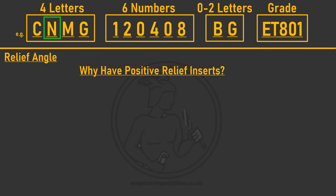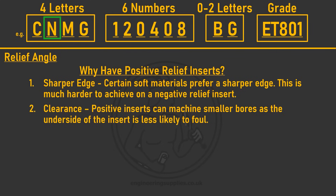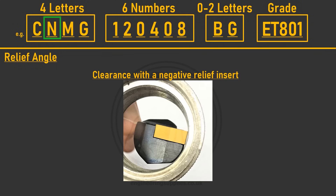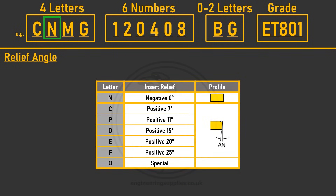Positive relief inserts exist for two reasons. First, certain soft materials like aluminium prefer to be machined with as sharp an edge as possible, which is more difficult to achieve with a negative relief insert. Second, and most commonly, clearance — when machining the inside of a bore, the underside face of a negative insert will rub before the cutting edge engages. A positive insert's clearance angle prevents this. Common relief angles are: C=7°, P=11°, D=15°, E=20°, and F=25°.